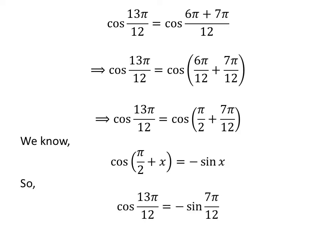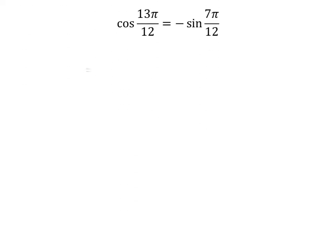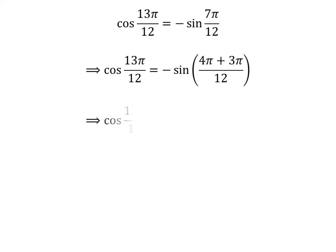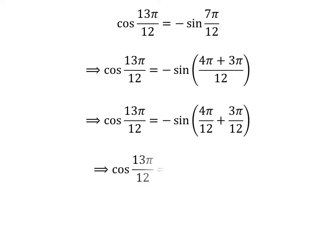So cosine of 13 times pi upon 12 is equal to minus sine of 7 times pi upon 12. So cosine of 13 times pi upon 12 is equal to minus sine of pi upon 3 plus pi upon 4.